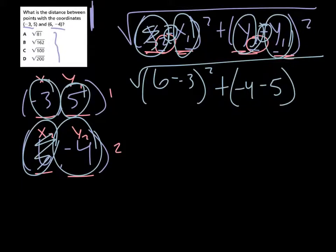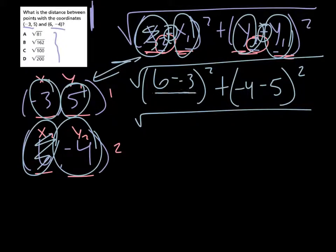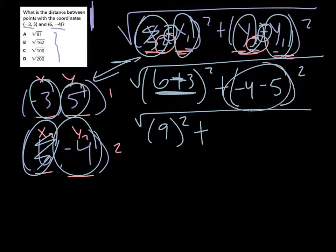Okay, now we just simplify. You're done. The hard part's really just plugging it in correctly, and you did that. So now you just work it. 6 minus -3 is going to be 6 plus 3, because minus a negative turns into a positive. So it'd be 9², and then -4 minus 5 is -9, squared.